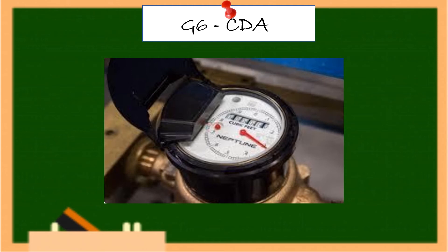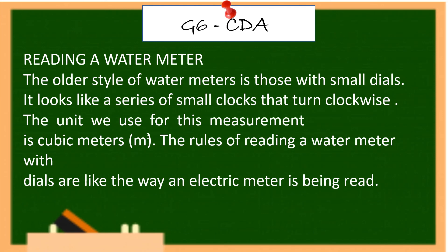Today, most households use a water meter with an odometer to measure the amount of water consumption. The older style of water meters uses small dials that look like a series of small clocks turning clockwise. The unit used for this measurement is cubic meters. The rules for reading a water meter with dials are the same as reading an electric meter.